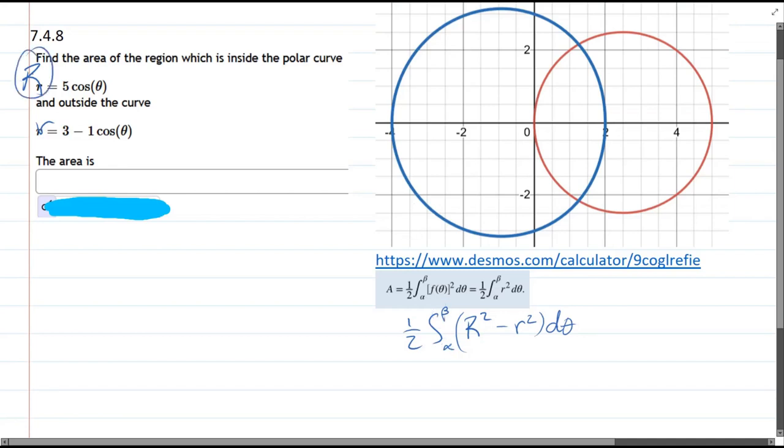So again, big R is the big R and little r is the little r. Let's get started. I used Desmos to graph this.